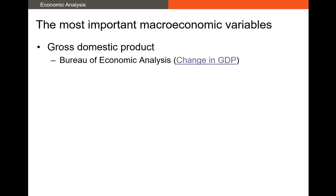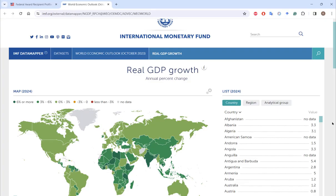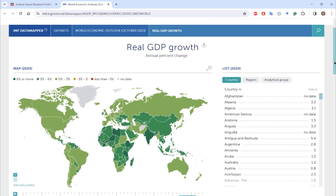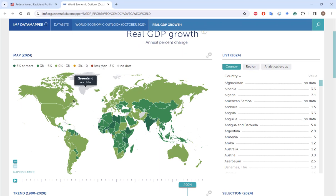Let's talk about the most important macro variables. First, we have GDP. In the U.S., this is put out by the Bureau of Economic Analysis. We care about the gross domestic product, but realistically we care more about the change in GDP. I've clicked the hyperlink in this PowerPoint and we have real GDP growth across the world. Green is quite good — the darker the green, the higher the GDP growth.